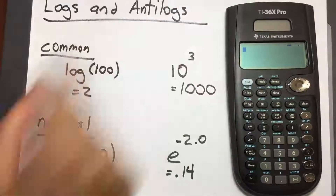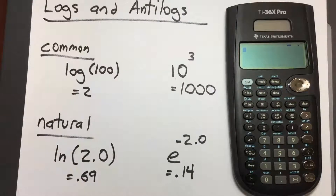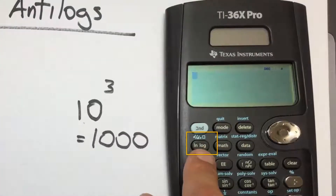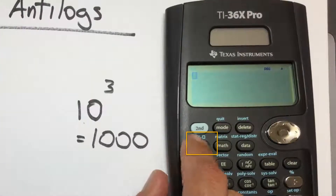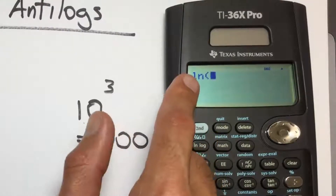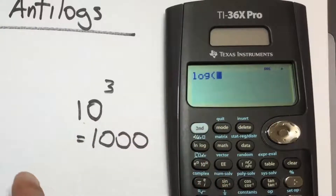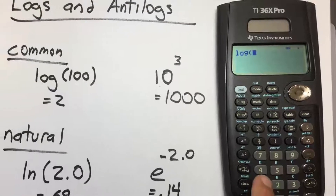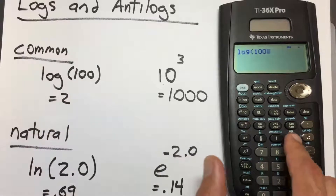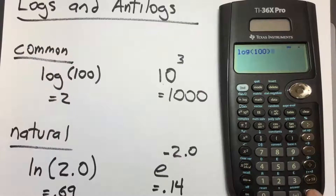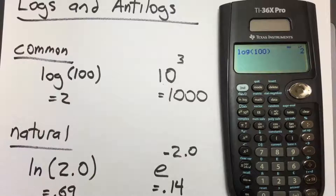For those of you using the TI-36X Pro, to take a common log we find the button that says LOG — it's up here, underneath the 2nd key. If you press this key once, it gives you LN natural log. We'll press it twice to get LOG. Then enter the number 100, close the parentheses, and press enter. That gives us 2, which is the correct answer.